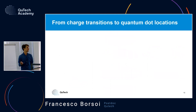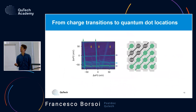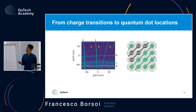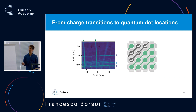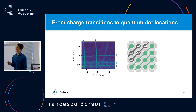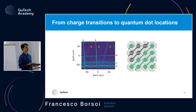One consequence of our shared-gate approach is that scanning, say, plunger P3 also changes the potential of Q3-bottom, Q3-middle, and Q3-top. So in most charge stability diagrams we see multiple sets of quasi-parallel charge transition lines — for example one set shown in yellow and another clearly distinct set in green. The task is to associate each set of lines with its corresponding quantum dot.